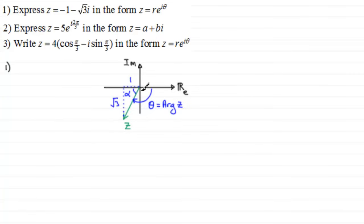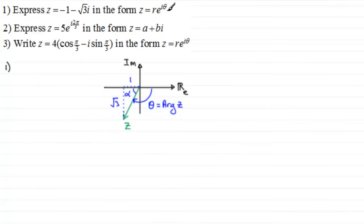I've just sketched it here: z equals minus one minus root three i. I've put the magnitude of these lengths in, and we've got the arg of z given by this angle, which is theta. So theta is the arg of z in the exponential form, and r is the modulus.